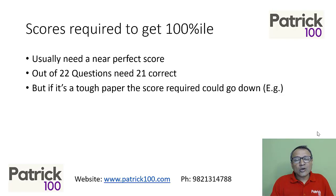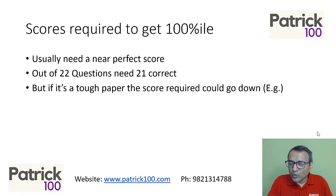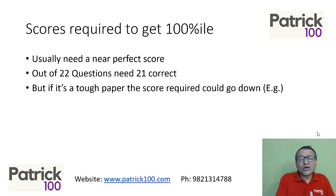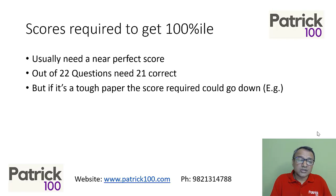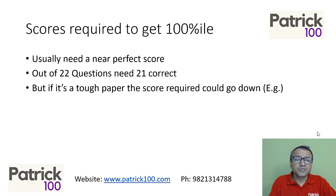There are cases where the cutoffs are much lower. If the paper has been tough and no one has scored all 22, the cutoffs could go even lower — sometimes down to 18 or 19 questions. But normally, looking at the last few years, it has been almost near-perfect scores.